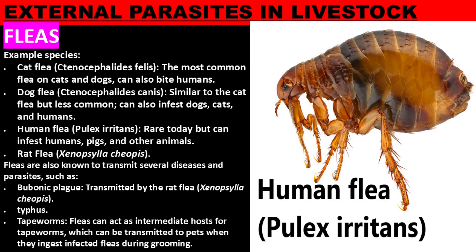Adult fleas spend most of their time on the host, but eggs, larvae, and pupae are often found in the host's surroundings, like bedding or carpets. Fleas can transmit diseases and cause discomfort through their bites, often leading to itching, skin irritation, and in severe infestations, anemia due to blood loss.